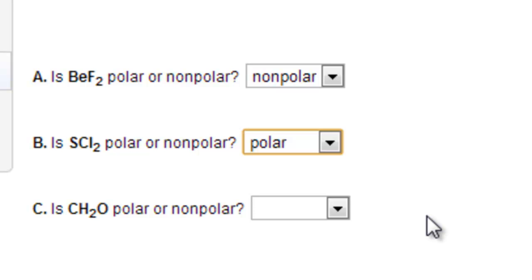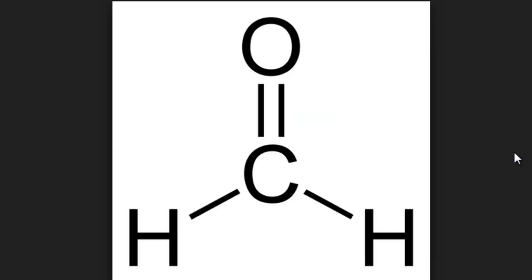CH2O, also known as formaldehyde, has a Lewis structure that looks like this. There are no lone pair electrons on the central atom, which is carbon, but the terminal atoms are different from each other, so this molecule is polar.